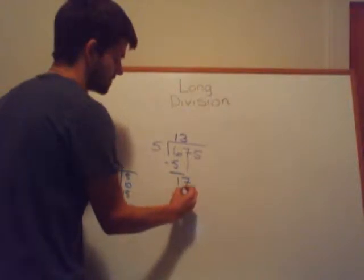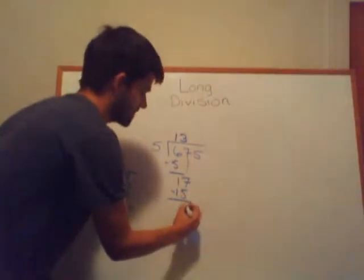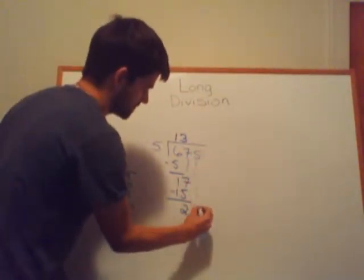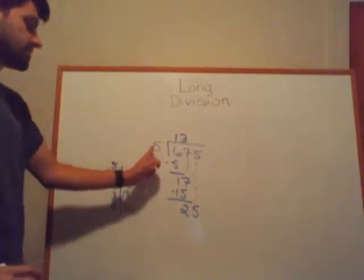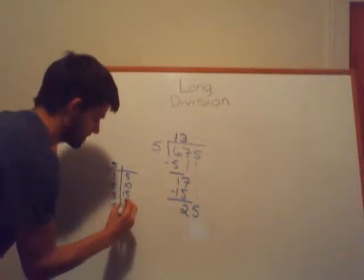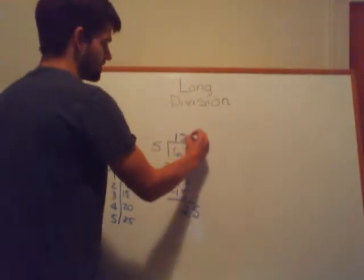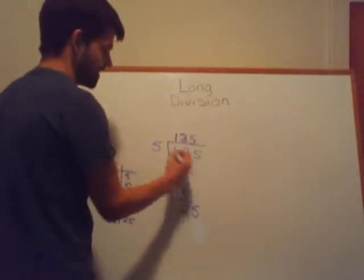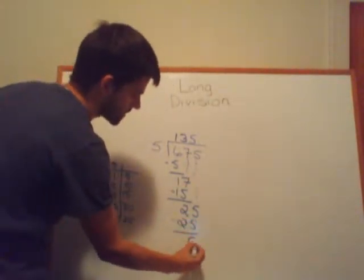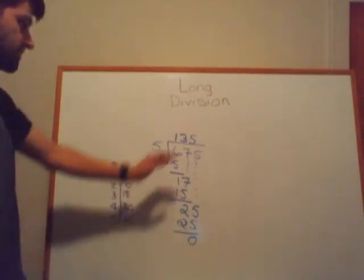So 5×3=15. Subtract: 17 minus 15 is 2. Bring down the 5. Now we're trying to figure out how many times 5 goes into 25. Continuing our times tables, 5×5 is indeed 25. So 5×5=25, and it goes in perfectly evenly — it doesn't go over.